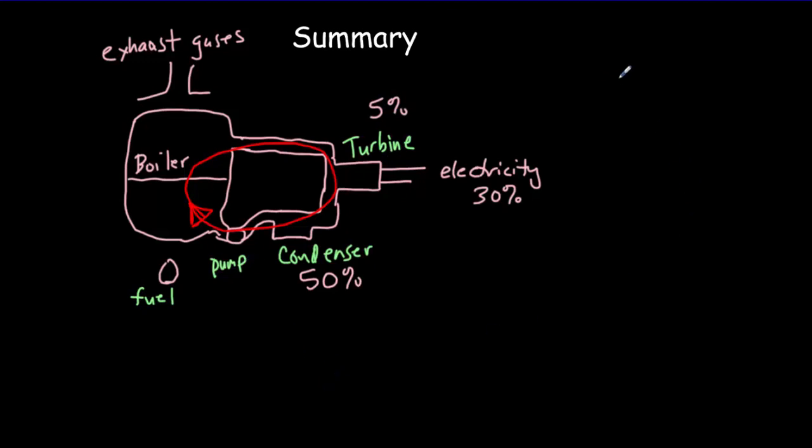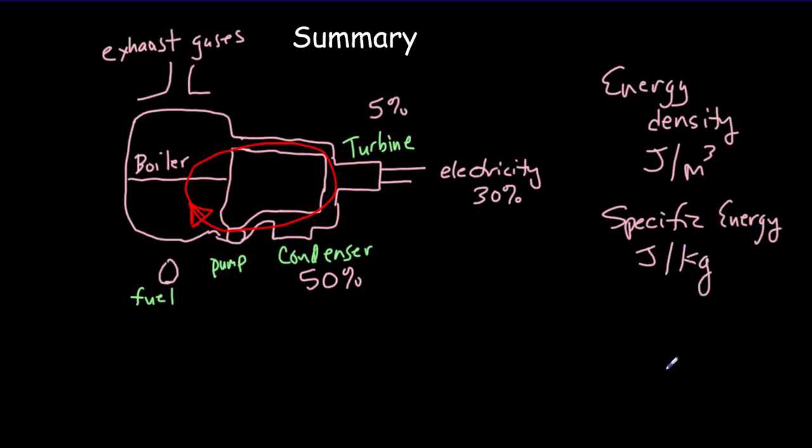We then talked about the energy density of a fuel. We said it was measured in joules per meter cubed, or energy units divided by volume units. And the specific energy, which was measured in joules per kilogram, so it would be the number of joules produced for every kilogram of fuel.